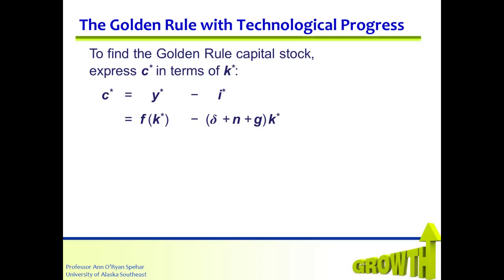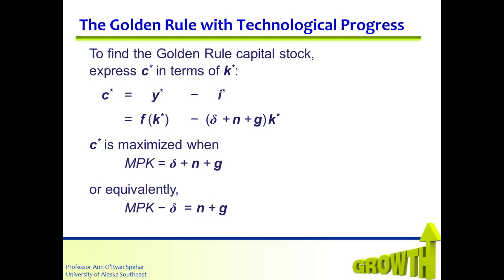To maximize consumption at the steady state, we take the derivative. The derivative of the production function F at K star equals the marginal product of capital, and the derivative of the linear function (delta plus n plus g) times K star equals the constant (delta plus n plus g). To maximize C star, we set it equal to zero, and we find that the marginal product of capital equals delta plus n plus g. Equivalently, the marginal product of capital net of depreciation equals n plus g. This tells us that at the golden rule level of capital, the net marginal product of capital — MPK minus delta — equals the rate of growth of total output, which is n plus g.